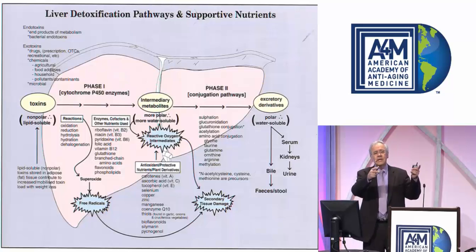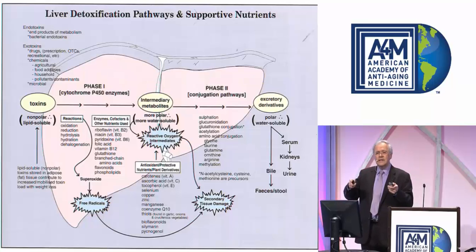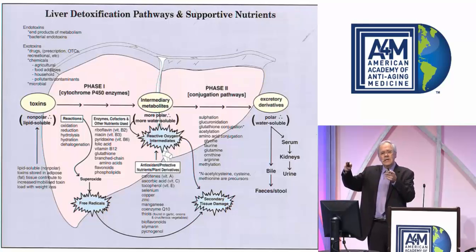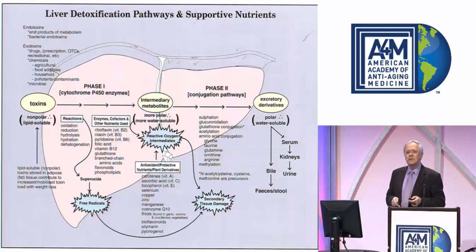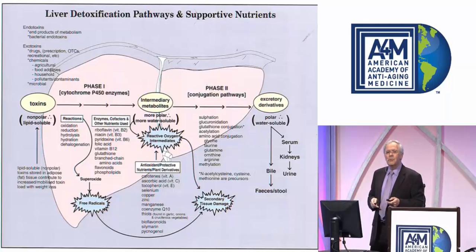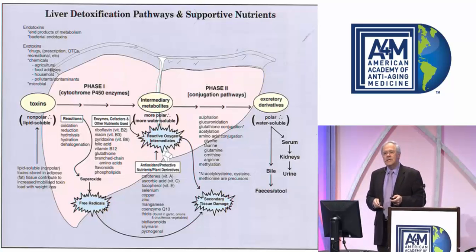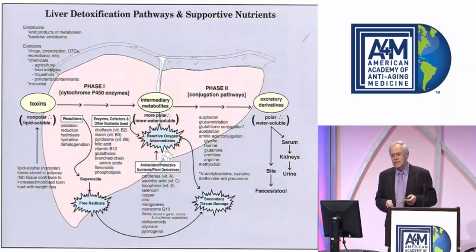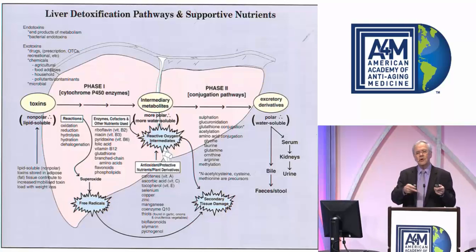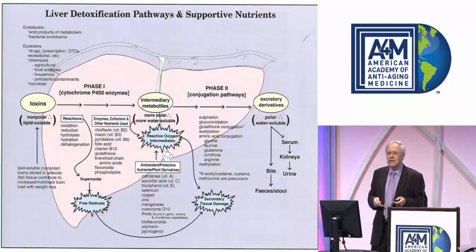The toxicants, whether they come from outside or inside the body, go through phase one — the cytochrome P450 system — where they become activated and then shunted over to phase two, where something is added. This makes them more water soluble and more likely to be excreted. These biotransformation reactions take place not just in the liver, but in all the cells lining the intestine, our lungs, brain, kidneys, and skin.